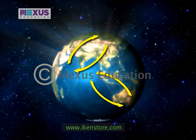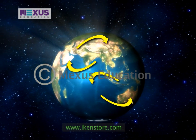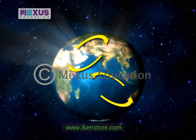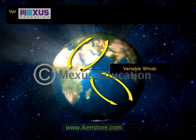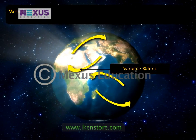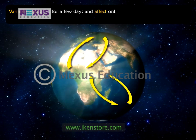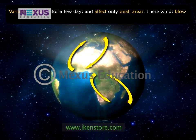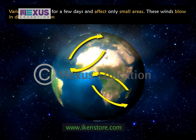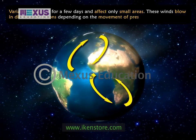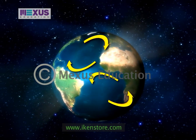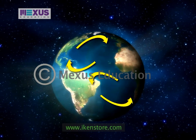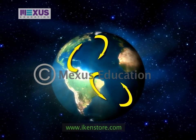The third major wind system is that of the variable winds, which are also related to pressure systems. Variable winds last for a few days and affect only small areas. These winds blow in different directions depending on the movement of pressure systems. They are called variable winds because their speed as well as direction varies.